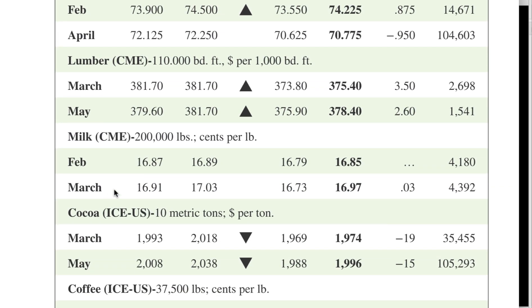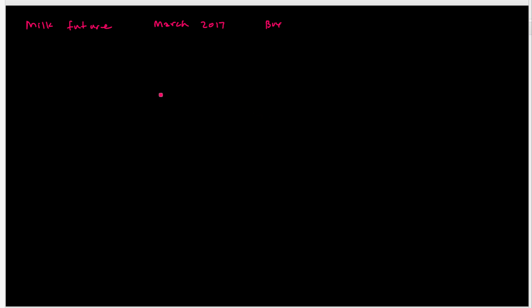There it is — milk. Milk is quoted in a contract of 20,000 pounds, and it's written in cents per pound. Going to the bolded settlement column for March, we find the price is $16.97. We need to convert that into cents, so the initial price is $0.1697 per pound.